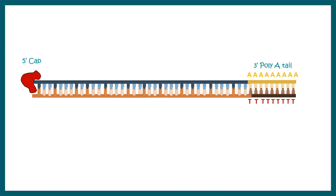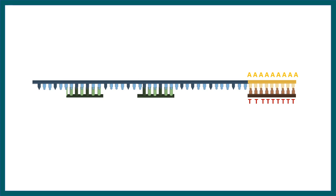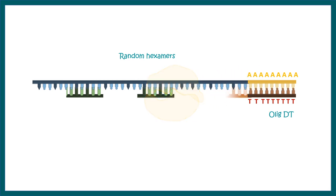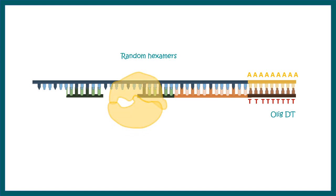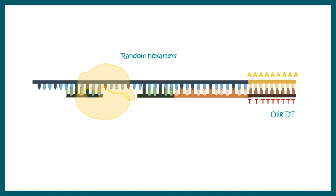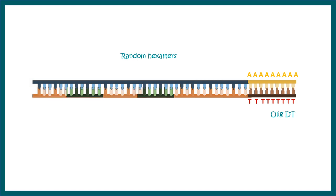In reality, this reaction is a little more complex. Instead of using only oligo-dT, scientists prefer to use a combination of oligo-dT and random hexamer primers. The reverse transcriptase starts its journey from the oligo-dT, and wherever there is a random hexamer, it can start a fresh elongation from that point. Since processivity of reverse transcriptase is low, using this combination gives good yield.